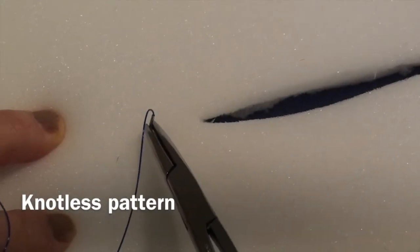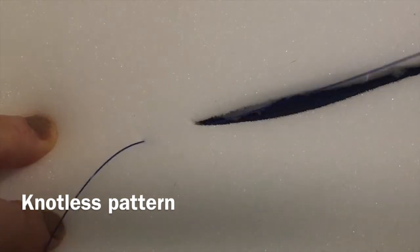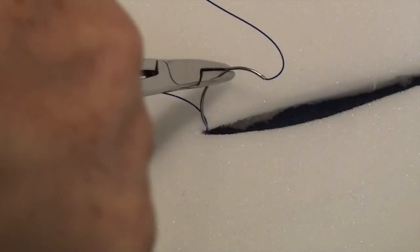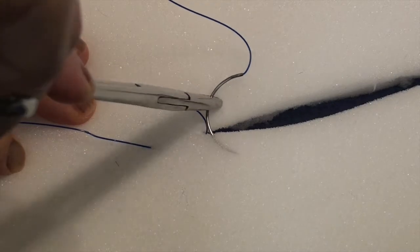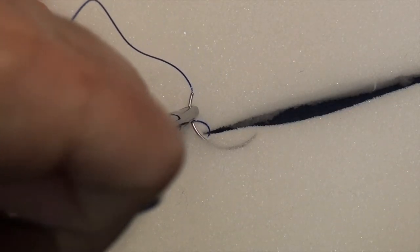Start this pattern at a distance from the incision and pull your needle through the sub-Q at the beginning of your incision. This pattern involves creating two horizontal mattress stitches, one within the other.